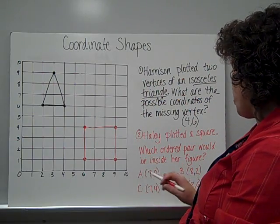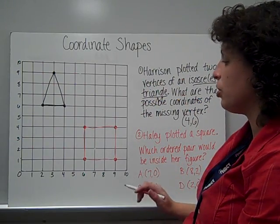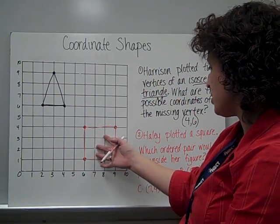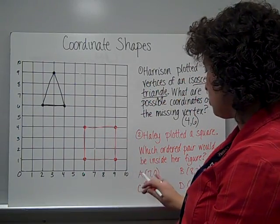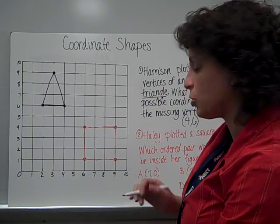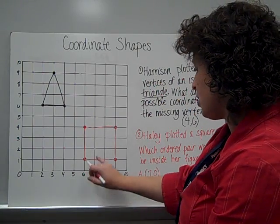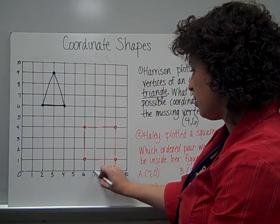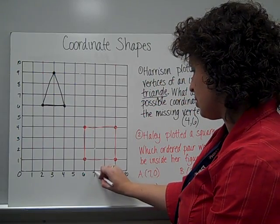The question is, which ordered pair would be inside her figure? Okay, so inside is going to have to be one of these in here. So let's just check our choices and see which one is true. Seven, zero. That would be down here. That is not it.